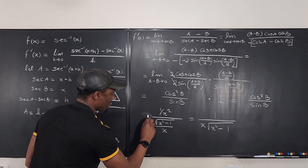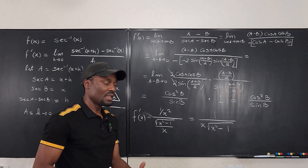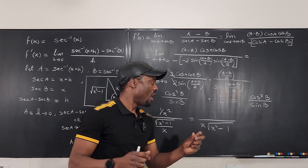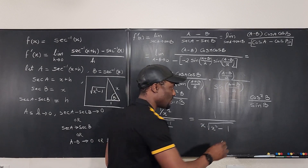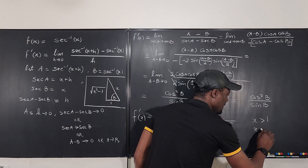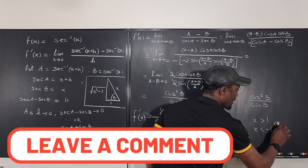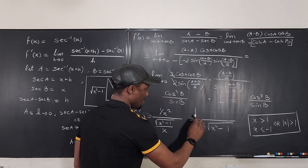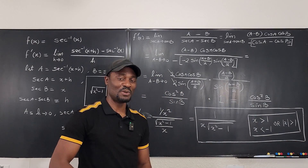So f prime of x equals 1 over x times the square root of x squared minus 1. This is the derivative of inverse secant of x from first principles. Remember, because of the nature of secant, the inverse secant cannot have inputs from negative 1 to 1, so x must be greater than 1 or x must be less than negative 1, which we write as the absolute value of x greater than 1. Never stop learning — those who stop learning have stopped living.